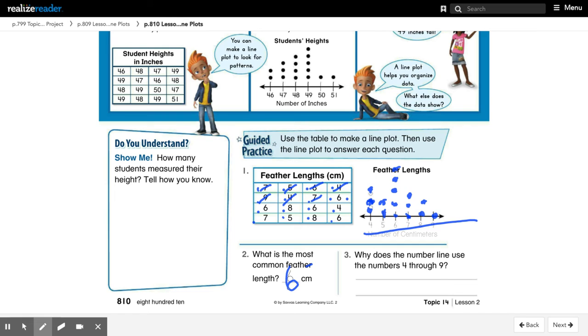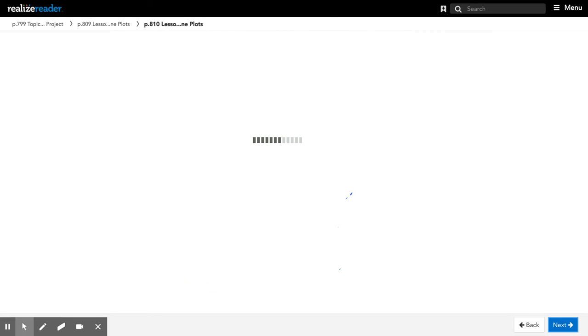So now number three says, why does the number line use the numbers four through nine? Well, let's think about this. Why do they use the numbers four through nine? Well, if you look up here at our data points, the numbers that are occurring are numbers four, five, six, seven, eight, and nine. So because the graph is using all those numbers, our number line has to match that as well. So that's a lot for me to write right now, but you can put that into your own words and write it right there. So let me go and erase this real quick so that we can look at what's next.